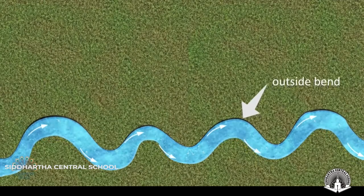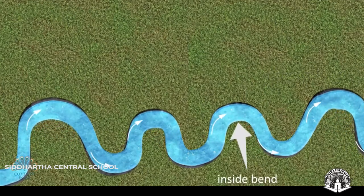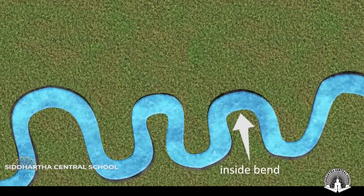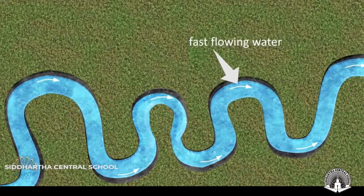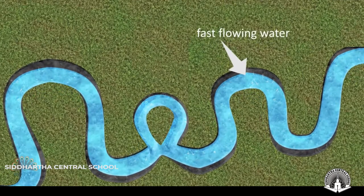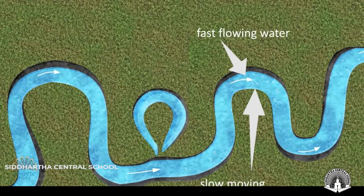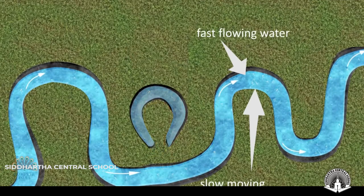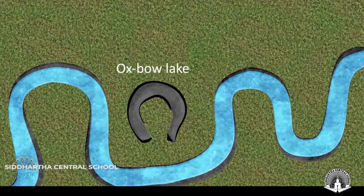In the lower course, a meander becomes very pronounced. The outside bend erodes rapidly and the meander loop becomes almost a complete circle. Gradually, the narrow necks of the loop erode further and intersect each other. The river then cuts through the intersection to flow in a straight path. As a result, the meander loop is abandoned and forms an oxbow lake. The oxbow lake later turns into a swamp, and subsequent floods may silt it up until it becomes marshy and eventually dries up.